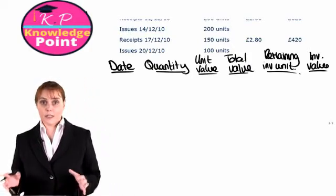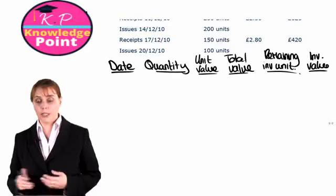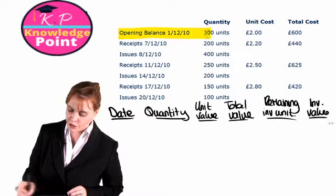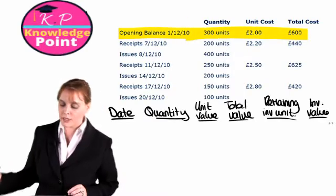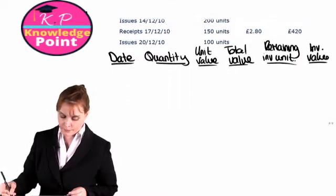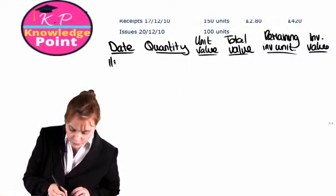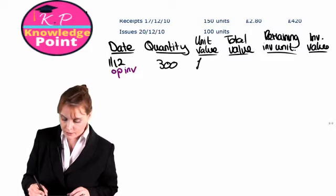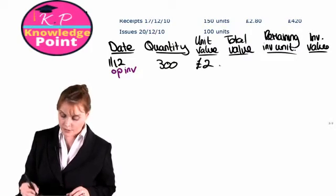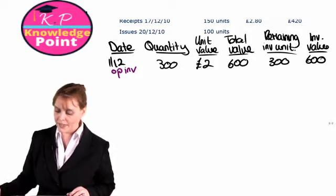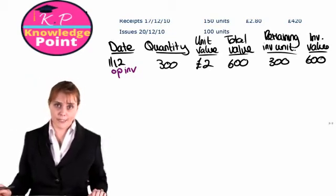It is going to begin the same way as the previous exercise. Looking at the top of the information, we have our opening inventory of 300 units with a total value of £600. So on the 1st of December, we have our opening inventory: 300 units, unit value of £2, total value of £600. And that will be the same as the total inventory in our warehouse.